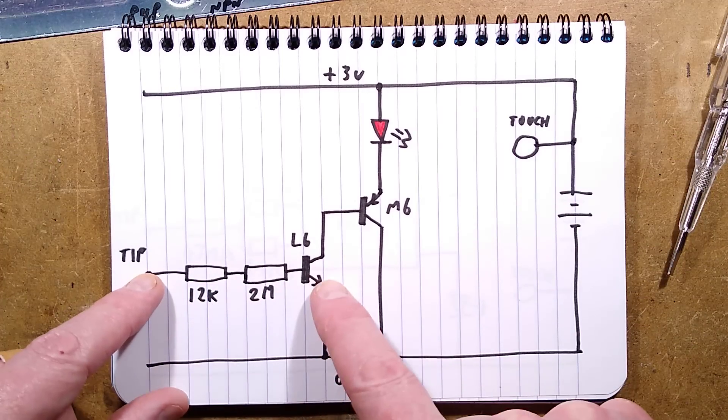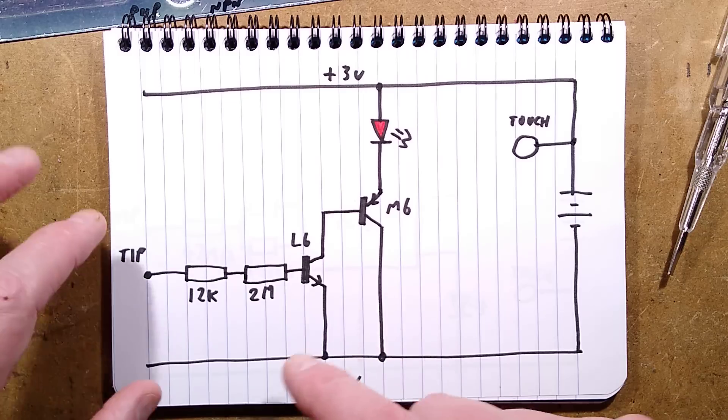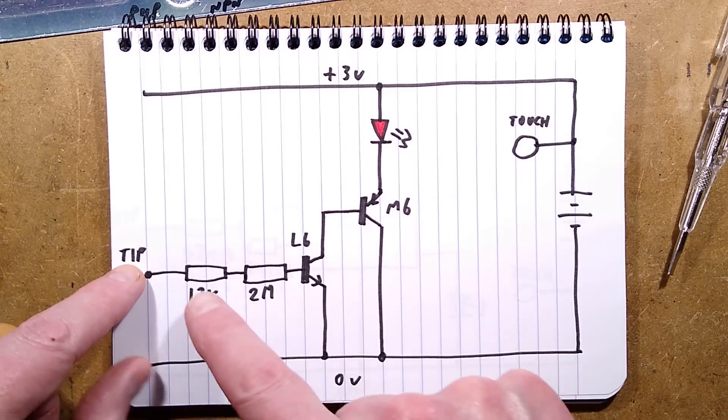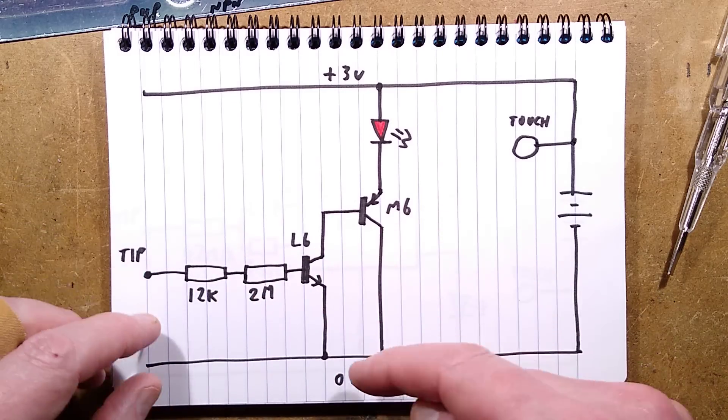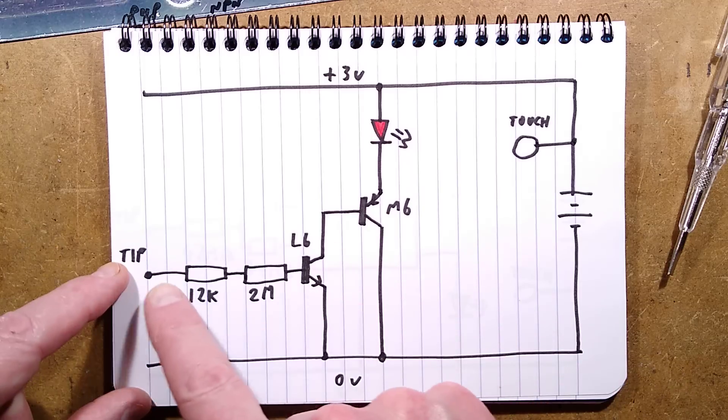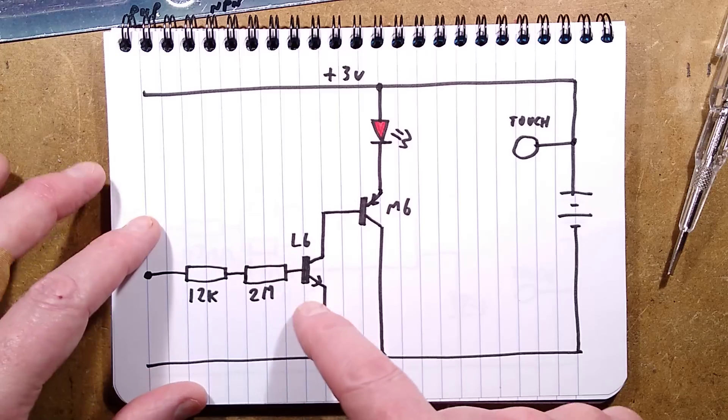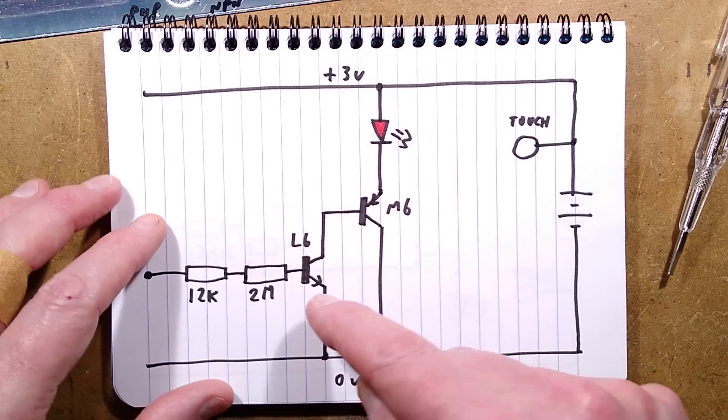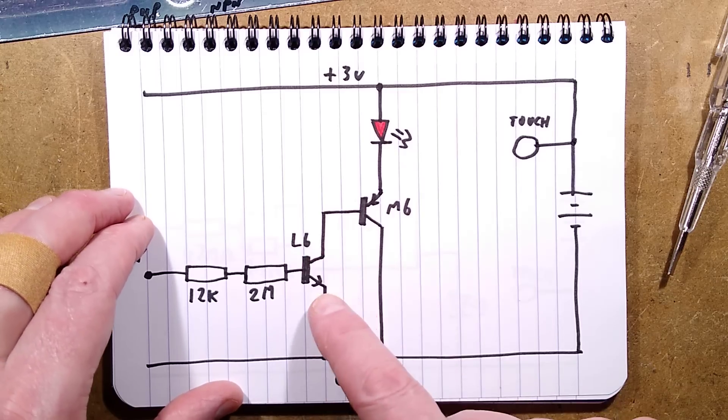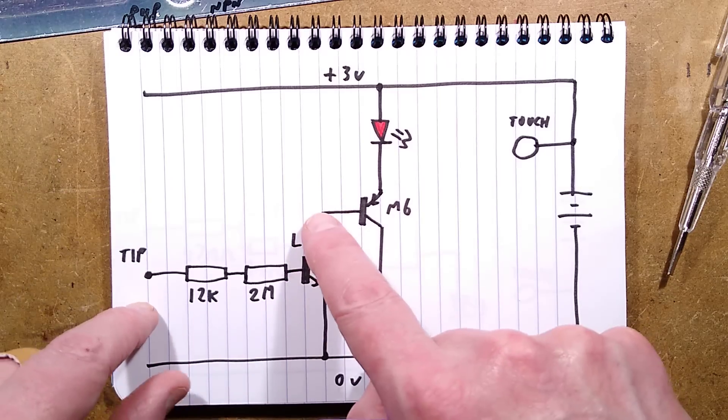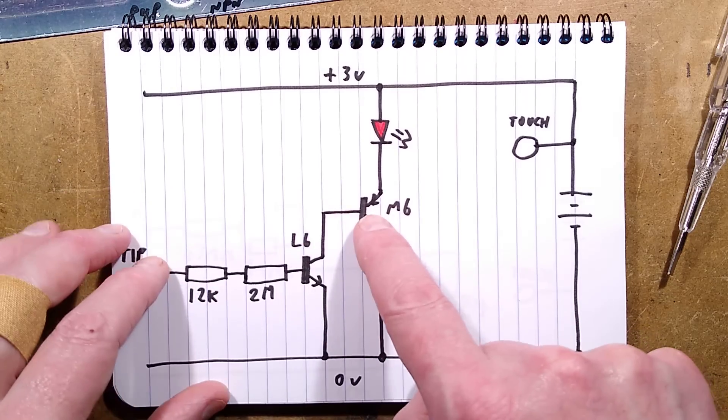So, the first transistor here, which is NPN, amplifies that small amount of current to a degree. It wouldn't be a huge amount of amplification. It will start off with a very low current. So, I'd guess the amplification here will be about 300 times. It's what it usually is for these little signal transistors.